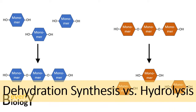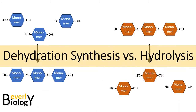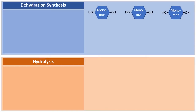The topic of this video is the process of dehydration synthesis versus hydrolysis. Starting with dehydration synthesis in the blue area: it's a chemical reaction that bonds multiple monomers into a single larger polymer. Monomers are just small carbon organic building blocks, and in the animation there are three hexagons labeled 'monomer.'